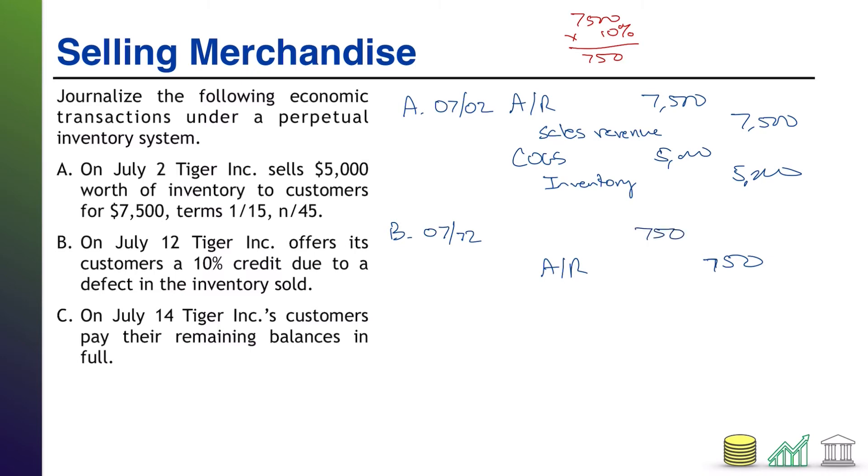The problem is, what's the debit that goes with this? Now, logically, we could look at this, AR and sales revenue, and we could say, well, if we're reducing the AR, shouldn't we also reduce the sales revenue? And conceptually speaking, that's absolutely right. We do need to reduce the sales revenue. However, we do not do that by recording a debit to sales revenue. In fact, you'll rarely ever see a debit to sales revenue.